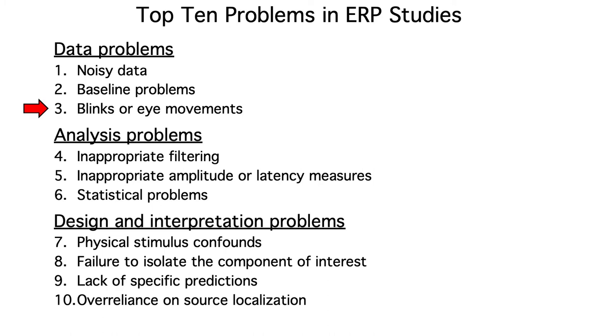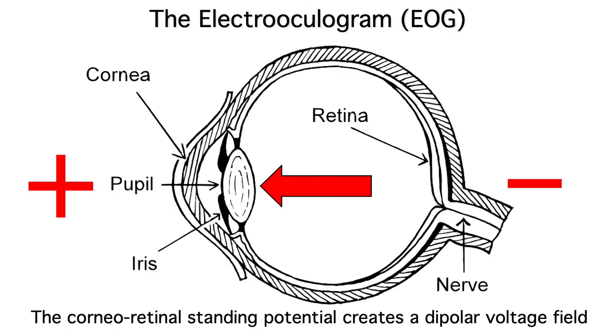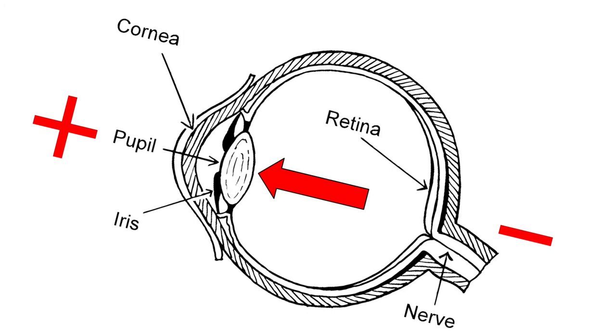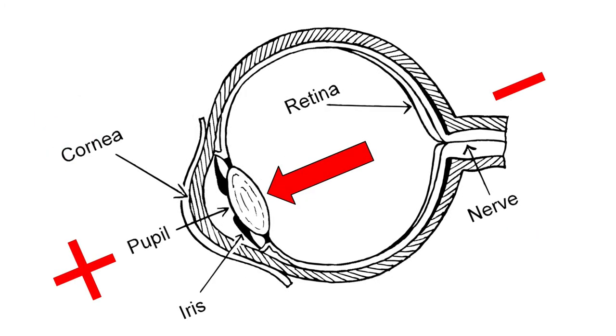Now, let's move on to blinks and eye movements. Remember, each eye contains a powerful dipole that's positive in the front and negative in the back. When the eyes move, you get a change in the orientation of the dipole, which changes the voltage field on the scalp.